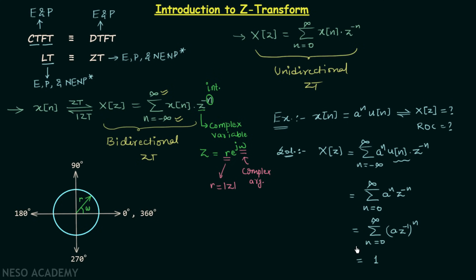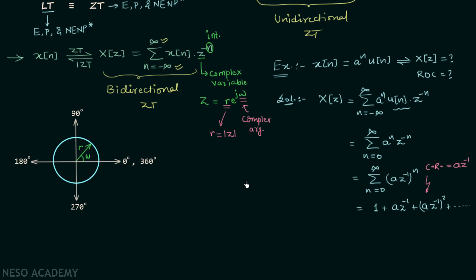The second term at n = 1 is a · Z^(−1), and the third term is (a · Z^(−1))^2, all the way to infinity. We can see that we are having the sum of an infinite geometric progression. The common ratio is a · Z^(−1), and the sum of an infinite GP is equal to the first term divided by 1 minus the common ratio. This formula can be used when the modulus of the common ratio is less than 1.